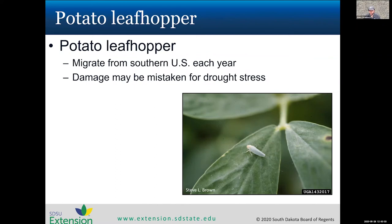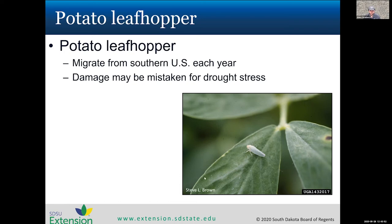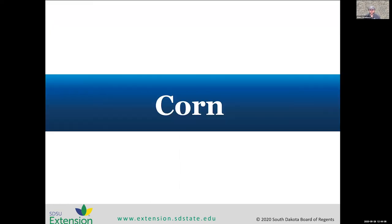Potato leafhoppers can also be an issue early season on alfalfa, though less so heading north for the first cutting. They have to migrate from the southern United States each year, so their timing varies by season. They're typically more of an issue for first-year alfalfa. Their feeding is often mistaken for drought stress. In the last couple of years with excess moisture rather than drought, if you see discolored leaves it could be hopper burn from potato leafhoppers — the outsides of leaves begin to discolor, looking reddish brown. That's all for alfalfa.